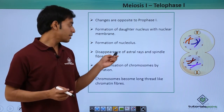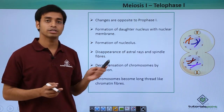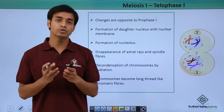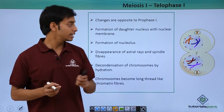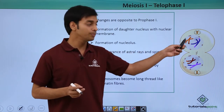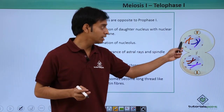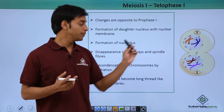There is also the disappearance of the astral rays and the spindle fibers. The spindle fibers which were formed at the stage of prophase 1 get disappeared, as you can see over here. The nuclear membrane has also formed.